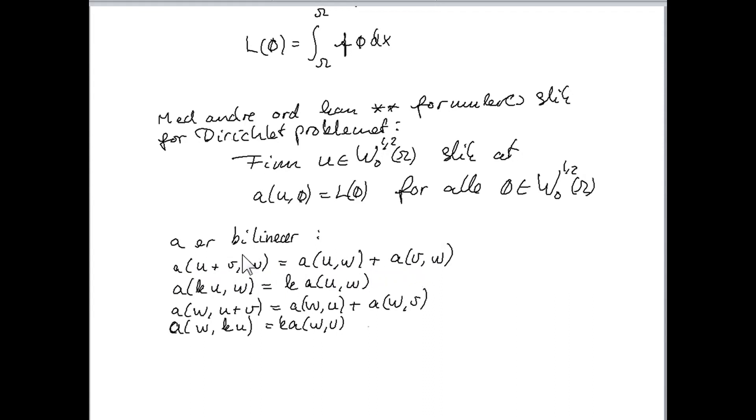So it's linear in the first variable. That means also that if we have some constant k and multiply it with u, then we can bring this constant out of the function, like this. This is a normal definition of linearity. The same takes place in the second argument.